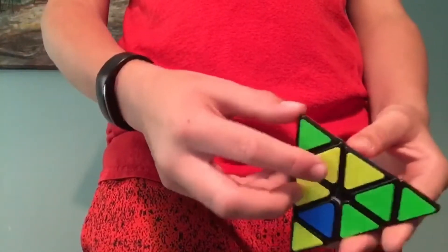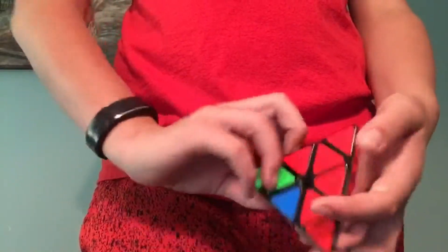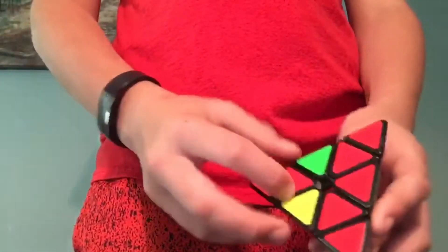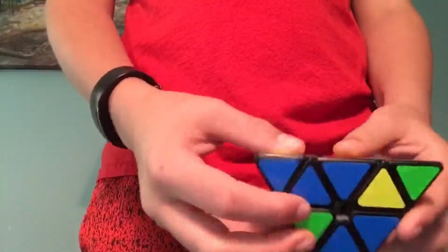So red would go right there, and then you turn and look, where's another red? It's right there, so you would turn. And now you see that these three are all red, so that side's fine.